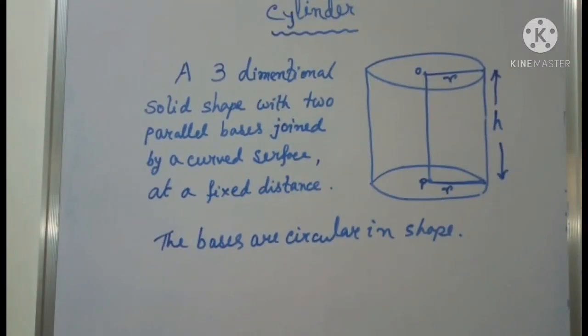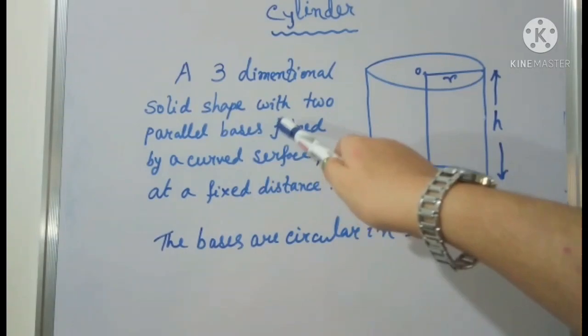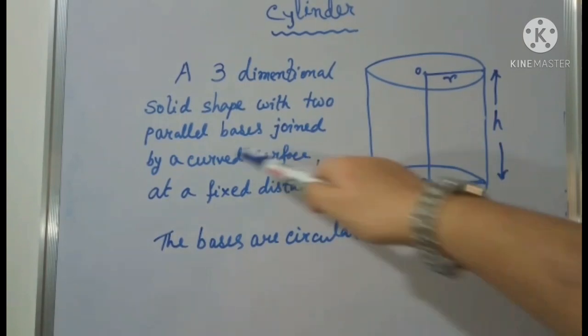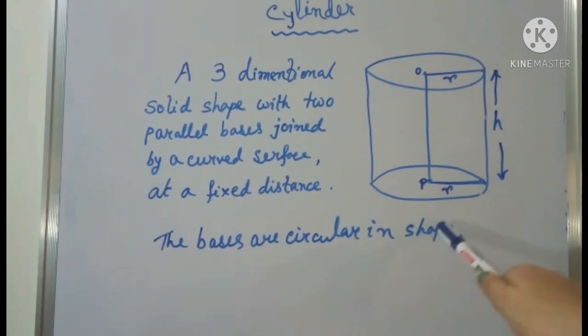First, we are going to discuss the basic structure of a cylinder. Here is the diagram of the basic structure of a cylinder. It is a three dimensional solid shape with two parallel bases. Here you can see two parallel bases are there, and it is joined by a curved surface at a fixed distance.